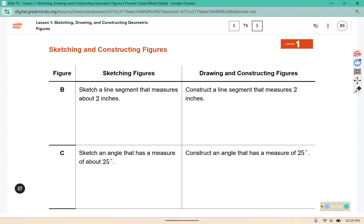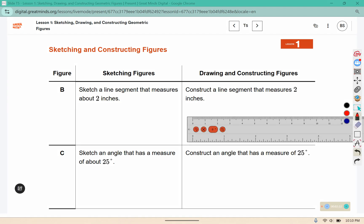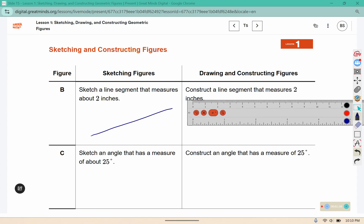For B, we are sketching a line segment that measures 2 inches, so we're approximating that it's 2 inches, and then here we're actually going to draw with the measurements to 2.